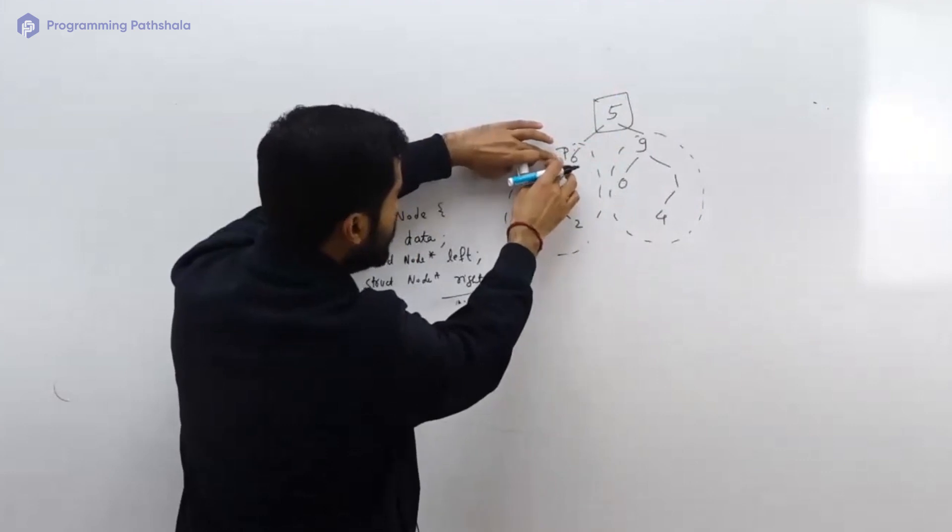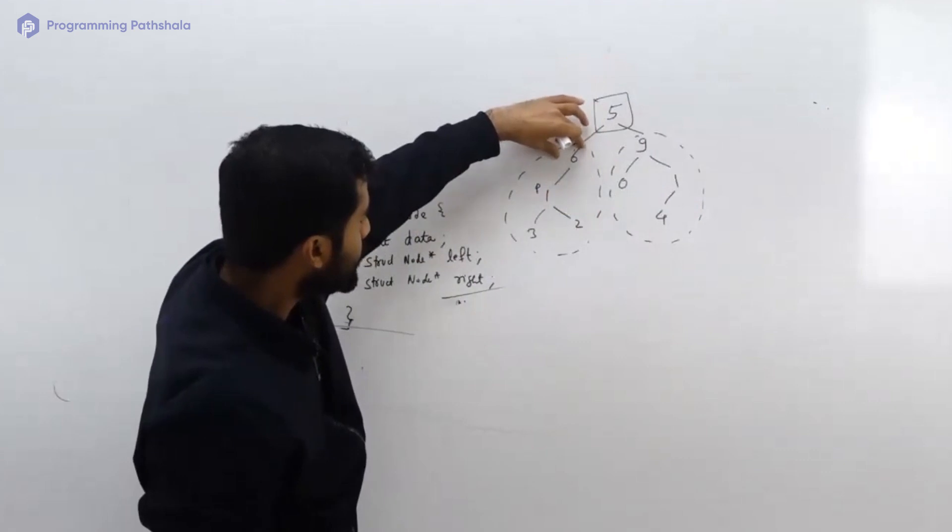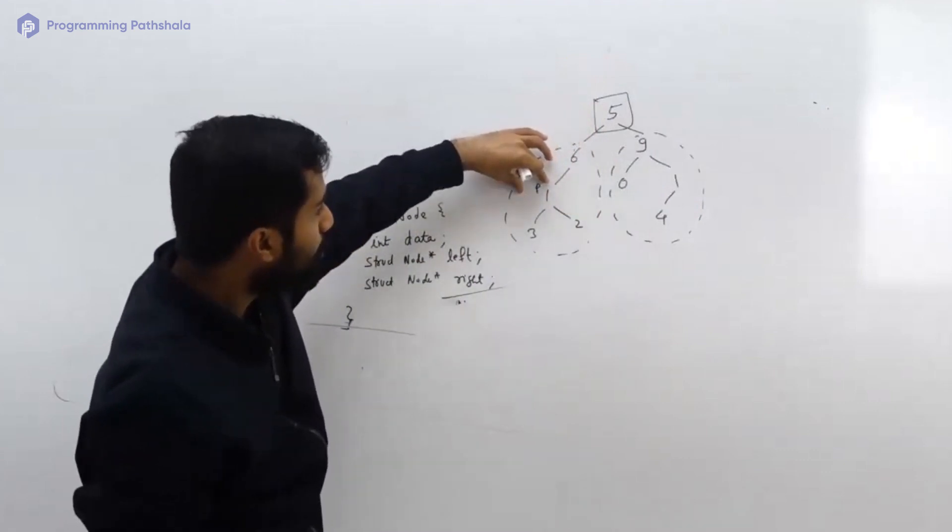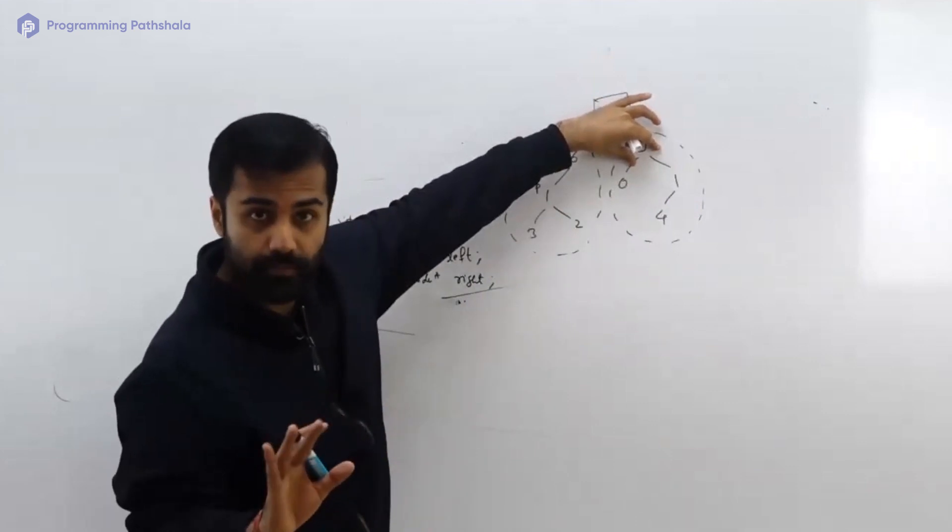From p.left again you can move to p.left. Now tell me one thing: all that you have done is you have come from here to here, from here to here. Is there any way to go back from here to here, here to here, and here? The answer is no, there is no way to go back.